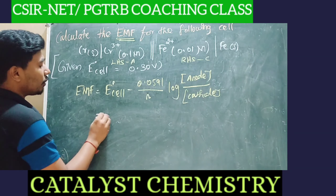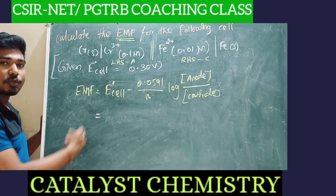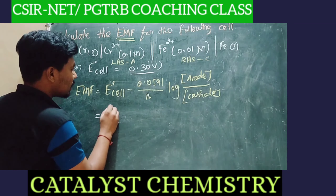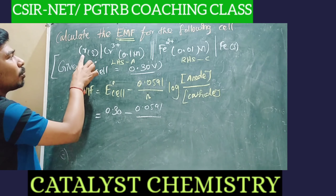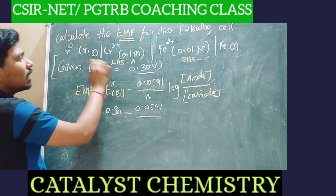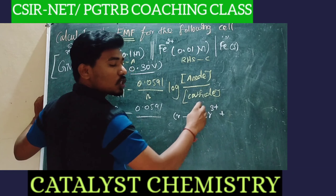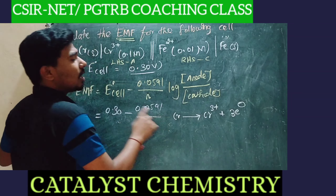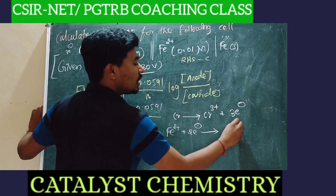N is the number of electrons transferred during the electrochemical reaction. For chromium: Cr → Cr³⁺, so 3 electrons are transferred. For iron: Fe²⁺ → Fe, so 2 electrons are transferred. Both are uneven, so we take the LCM: 2 × 3 = 6 electrons and 3 × 2 = 6 electrons. So the total number of electrons transferred N = 6.